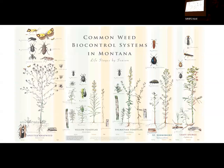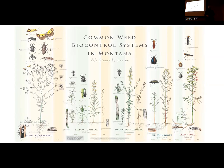Just to give you an idea of the common weed biocontrol systems in western Montana that are successful: we have spotted knapweed with over 12 approved biocontrol agents, with the weevil being most well recognized. Yellow toadflax has a very successful Mecinus weevil as a stem feeder. Dalmatian toadflax has Mecinus species as well with a stem feeder. Chrysolina on St. John's Wort. And then we have a number of flea beetles and Aphthona species, which are on leafy spurge.